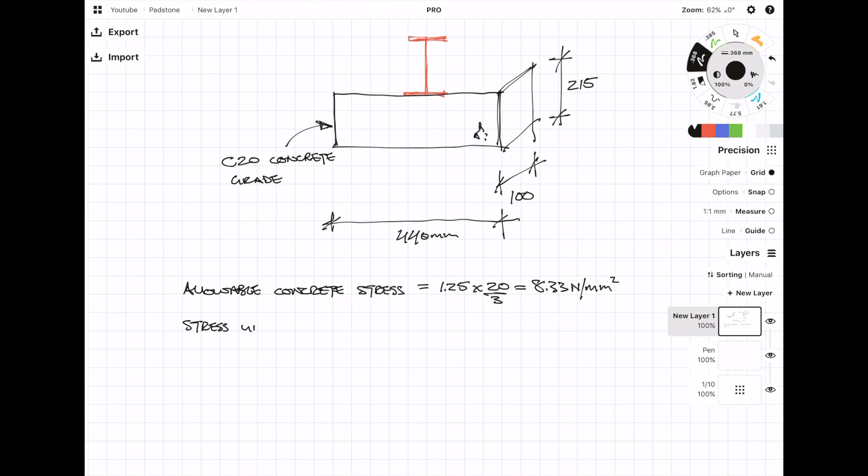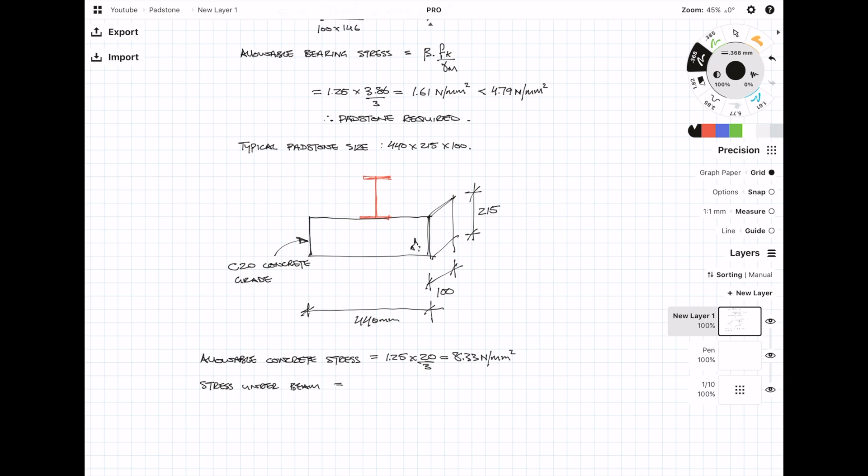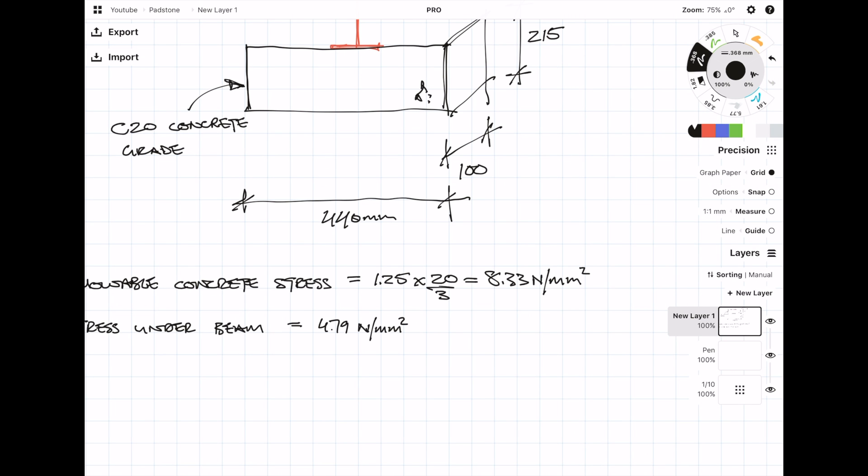We already calculated the stress under the beam earlier which came out to 4.79 newtons per millimetre squared. As we can see this value is less than the allowable concrete stress. Therefore the concrete grade is okay.